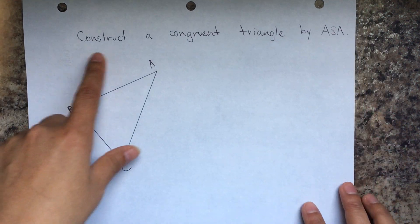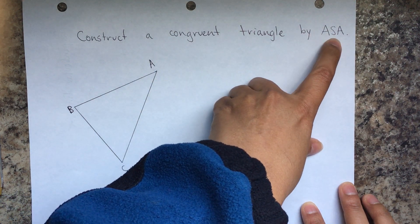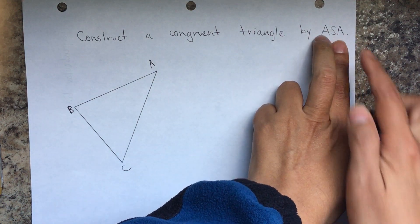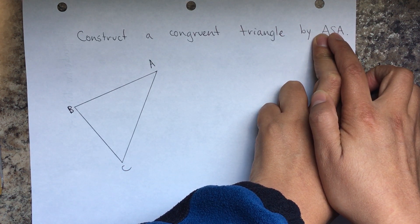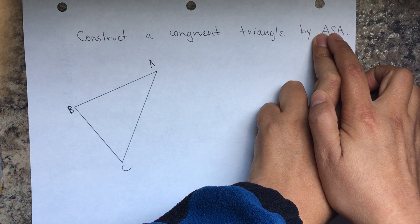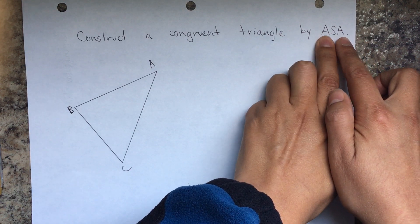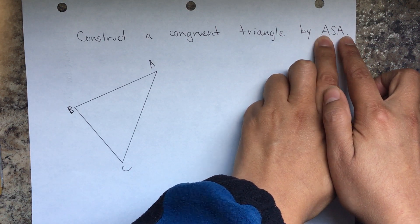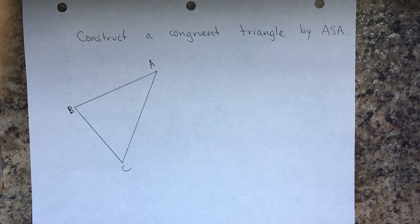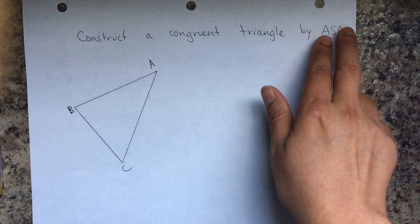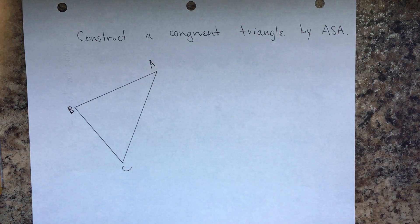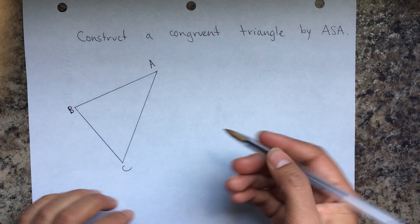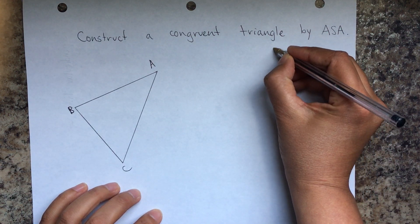So it says construct a congruent triangle by angle side angle. That means the side that is congruent to the other side on the other triangle has to be in the middle of the two angles. The side is in the middle of the two angles — that's called the included side.